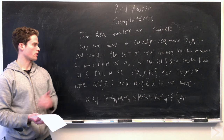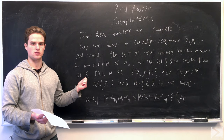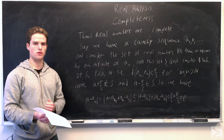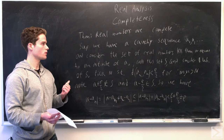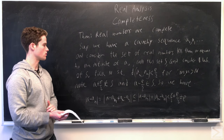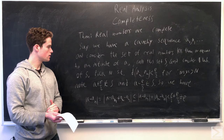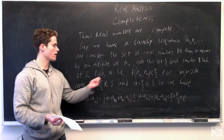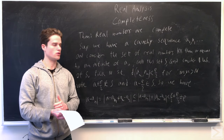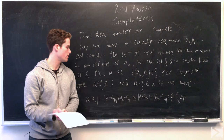We call this least upper bound A, and we're going to show the Cauchy sequence converges to A, so it converges to a real number, and so the real numbers are complete. We pick a big N such that the distance between A_m and A_n is less than epsilon over 2 for m, n greater than N.